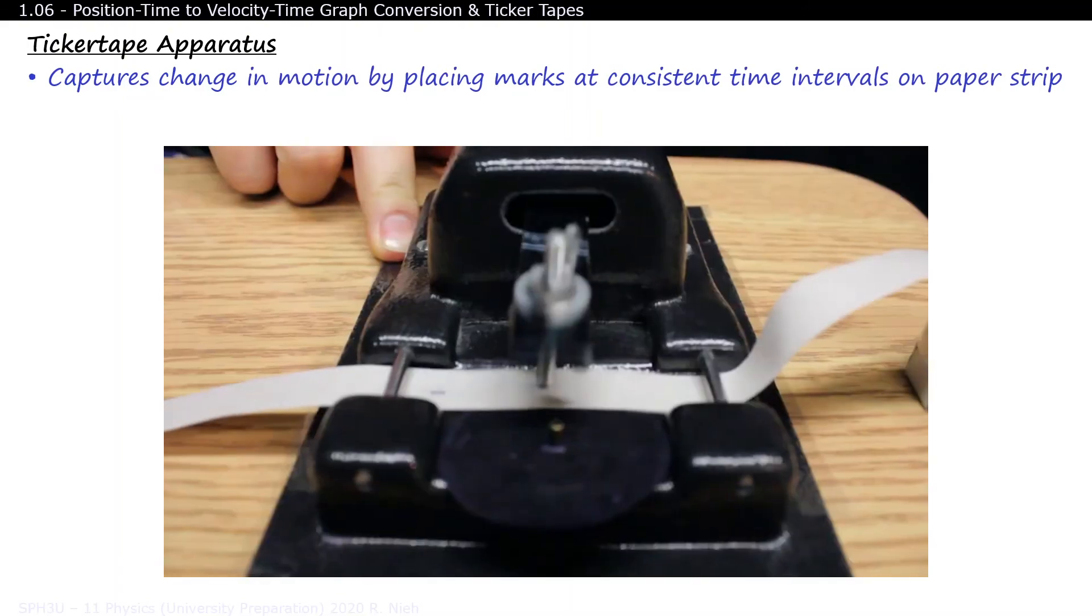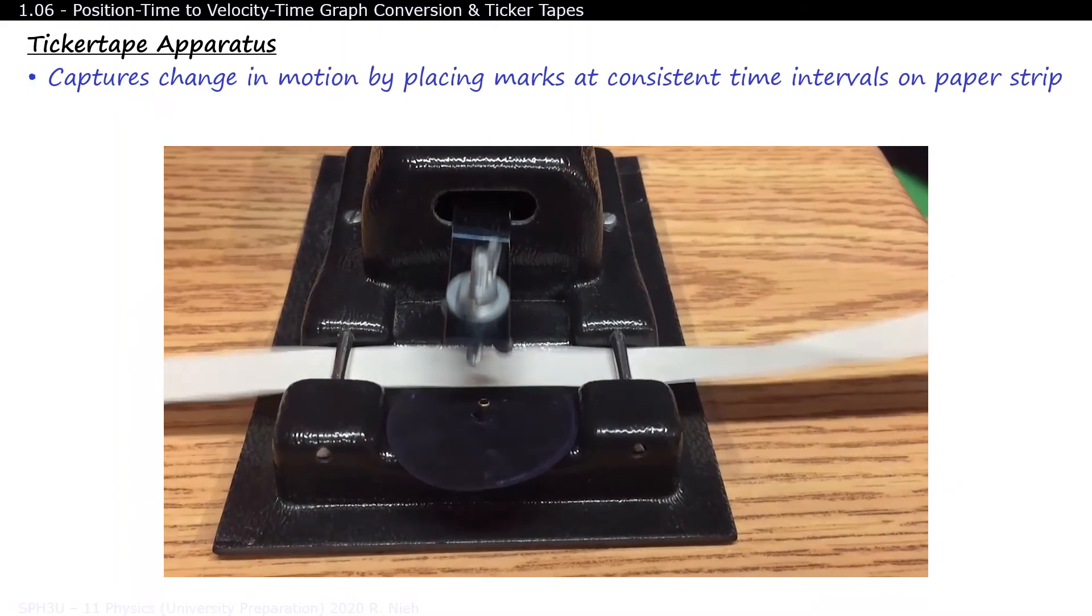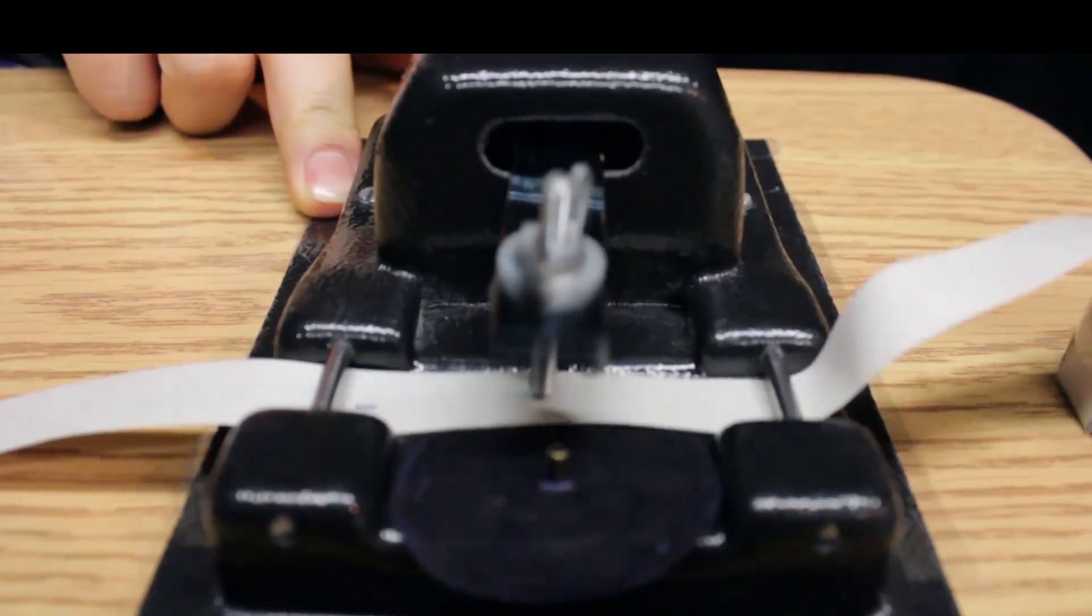In summary, the ticker tape apparatus is a machine that captures changes in motion by placing marks at consistent time intervals on a strip of paper. The machine operates at 60 hertz. This means that it's making 60 dots every second. Frequency can be calculated by dividing the number of events by the total time of the experiment.